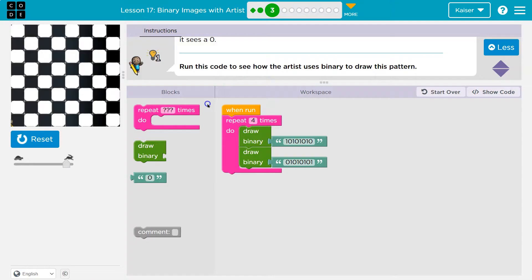This shows why it goes all the way down - we're repeating this four times. So anything in this pink block runs four times. It says okay, first time, draw binary, and it fills in each one.